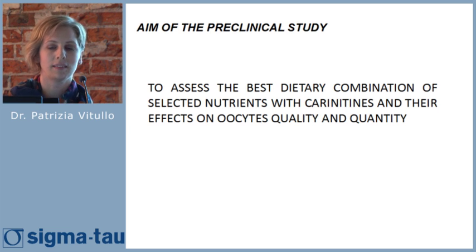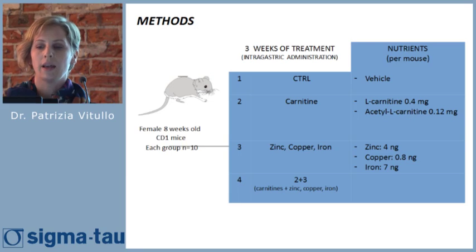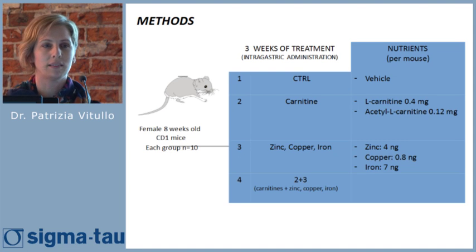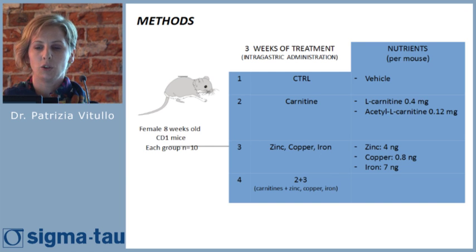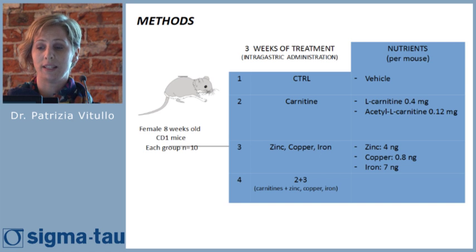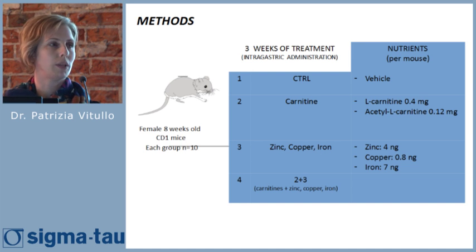The aim of this preclinical study is to assess the best dietary combination of selected nutrients with carnitines and their effect on oocyte quality and quantity. We used mice divided into four groups: group one is the control group treated only with vehicle (water); group two was treated with carnitine; group three with zinc, copper, and iron; and group four is the combination of carnitine with zinc, copper, and iron. Mice were treated for three weeks with intra-gastric administration of these compounds.